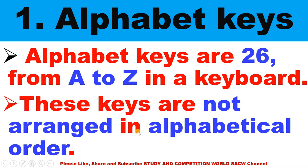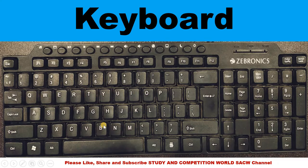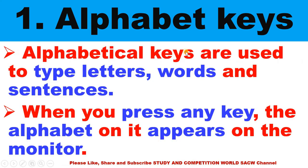These keys are not arranged in alphabetical order — see the picture. You can see here also: this is not arranged in alphabetical order. A, B, C, D, E — this is A to Z, these are alphabet keys. Alphabet keys are used to type letters, words, and sentences. If anybody asks you why alphabet keys are used, you will answer: for typing letters, words, and sentences. When you press any key, the alphabet on it appears on the monitor.